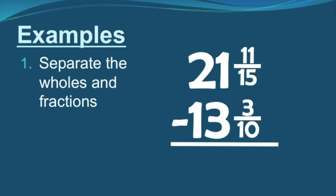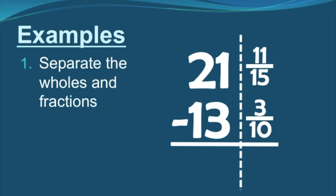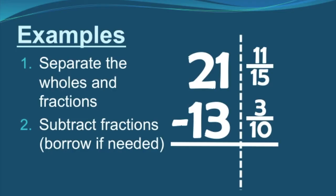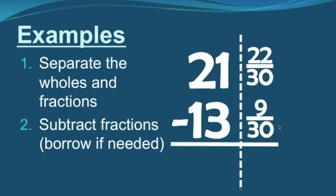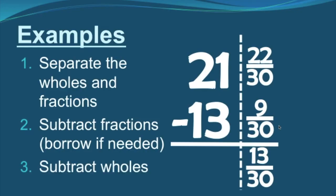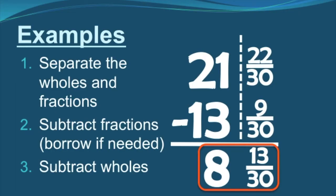Here's another example. Step one: separate the wholes and fractions. Step two: subtract fractions and borrow if needed. First we make sure the denominators are the same — we have a denominator of fifteen and a denominator of ten. The LCD is thirty, so our new fractions are twenty-two over thirty and nine over thirty. Since I have twenty-two out of thirty over here and nine over thirty here, I don't need to borrow. Twenty-two minus nine gives me thirteen over thirty. Step three: subtract the wholes — twenty-one minus thirteen gives me eight. My final answer is eight and thirteen thirtieths.